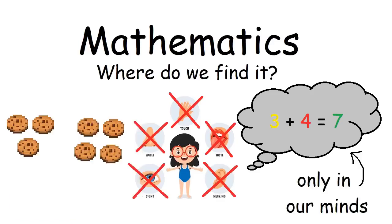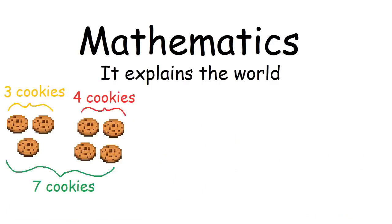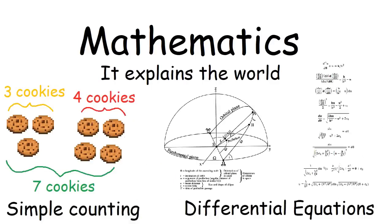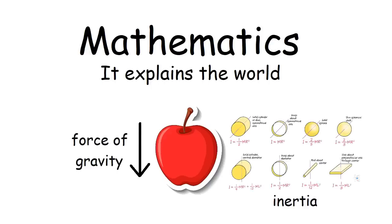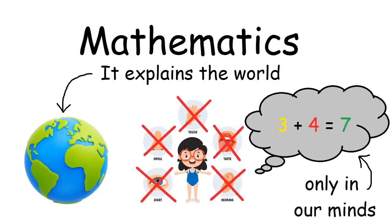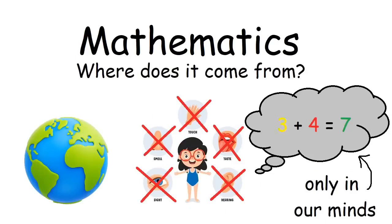But wait, math also explains things. Math can explain everything from simple counting to the movement of planets. For anything you can think of, there's a bunch of math that explains what's going on, even down to the atomic level. So if math is only in our minds but it also explains the natural world, then where does it come from?